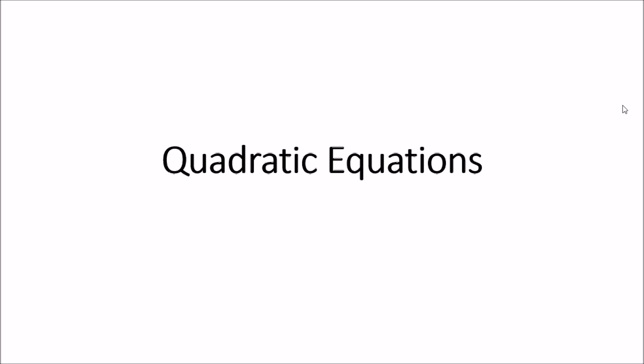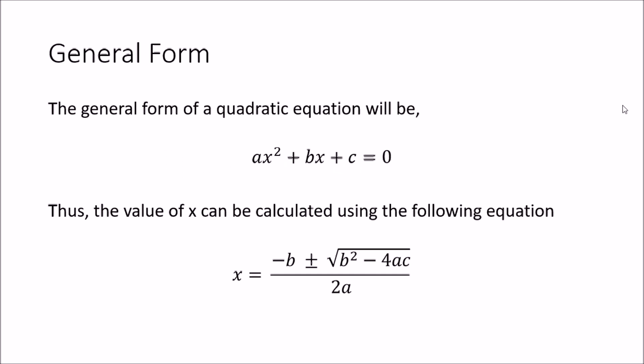So first of all let's see what is a quadratic equation. This is the general form of a quadratic equation: ax² + bx + c = 0.